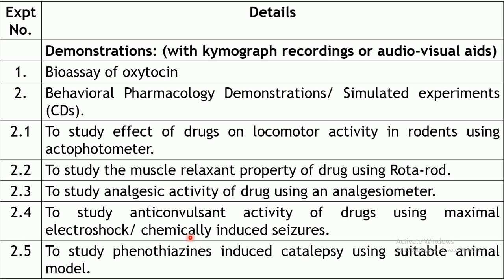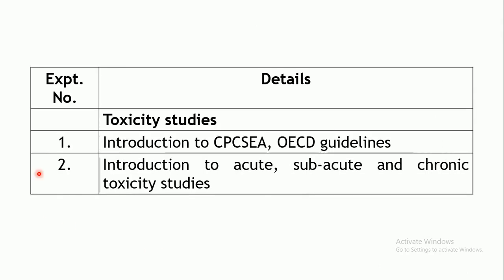The fifth experiment is to study phenothiazine-induced catalepsy using a suitable animal model. Phenothiazines induce rigidity similar to Parkinson's disease due to D2 receptor blockade; though phenothiazines are antipsychotic drugs, they can induce a Parkinson's-like condition. Anti-Parkinson's activity can therefore be checked using this particular catalepsy model.